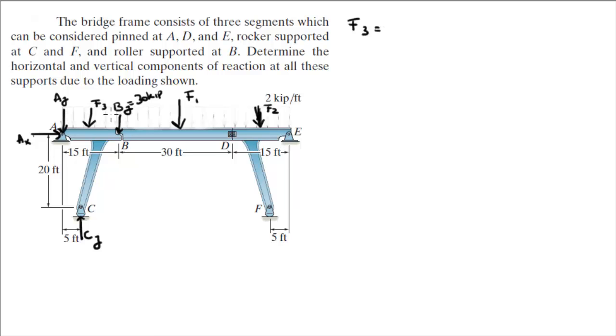Now, assuming clockwise is positive, sum of the moments at A is equal to 0. We got F3 times 7.5, turning this lever arm clockwise, plus BY times 15, turning this lever arm clockwise again. Minus CY times 5, turning this shorter lever arm with a length of 5 feet.